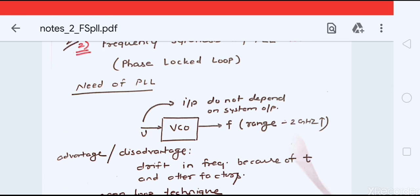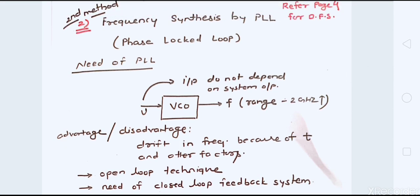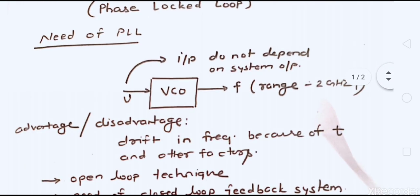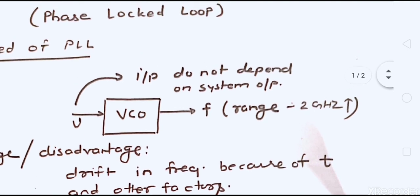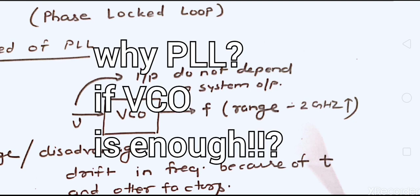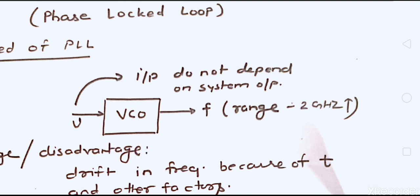We'll start with a very simple block of a phase-locked loop called the VCO — voltage controlled oscillator. The VCO itself can generate frequency. Being a very simple circuit, if I change the voltage input, which is a DC voltage input, it is going to produce a high frequency based on that DC voltage V, giving me the frequency output. So this itself can become a frequency synthesizer.